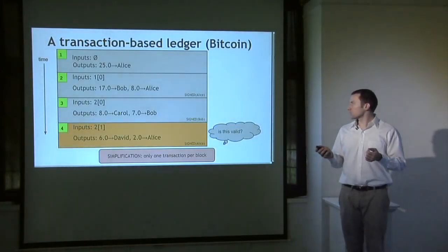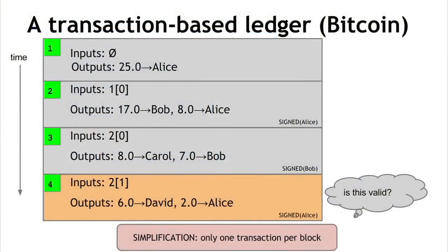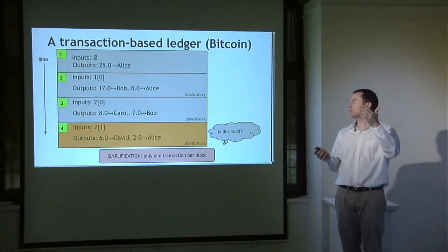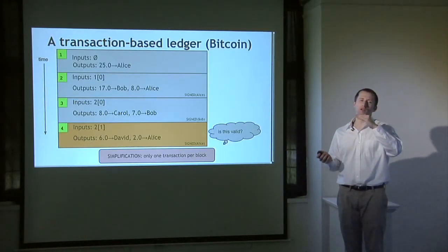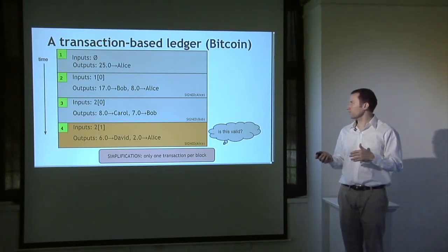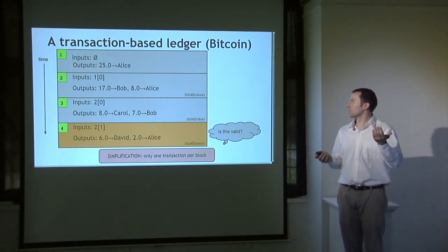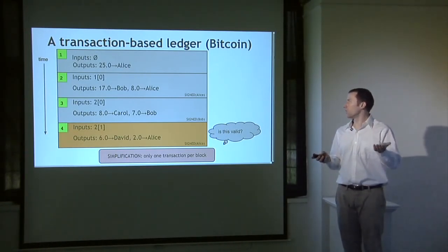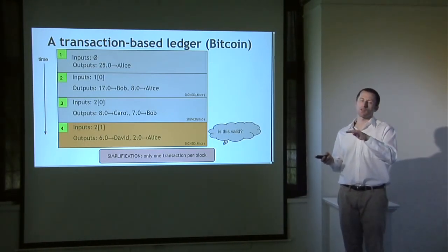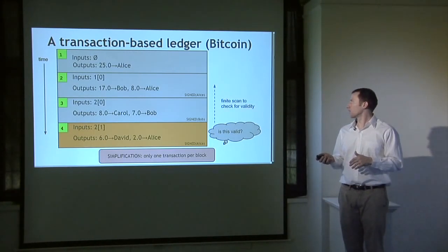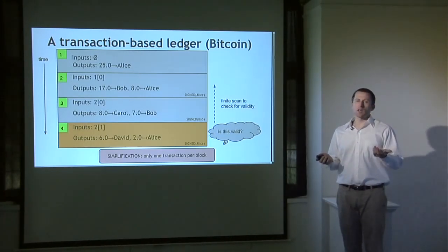When we add a new transaction and ask whether it's valid, it's now much easier to check the blockchain. We know exactly which input to look at — we go to transaction 2, output 1, and verify there's enough money there and it hasn't been sent already. We can look back and confirm that the second output of transaction 2 went to Alice with 8 coins, therefore enough to cover the outputs of the new transaction. It's a finite backward scan to check validity.